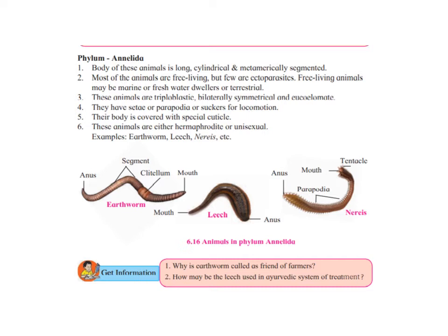In case of earthworm, setae help in movement. Their body is covered with a special covering called cuticle. They can be either hermaphrodite — meaning both male and female organs are in the same organism, as in the case of earthworm — or they can be unisexual, meaning separate male or separate female.